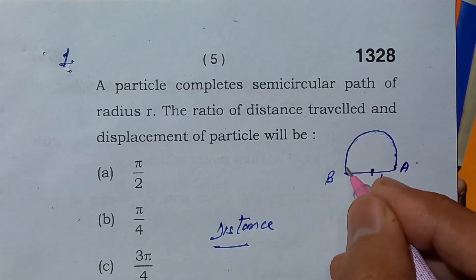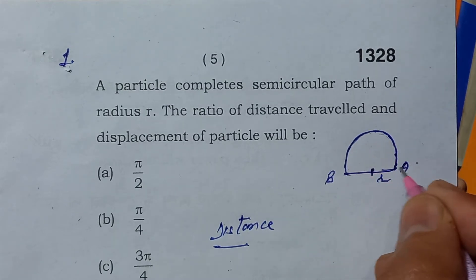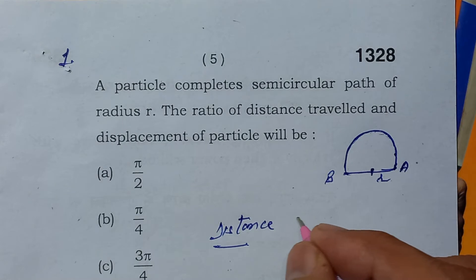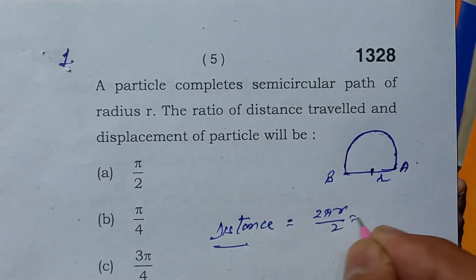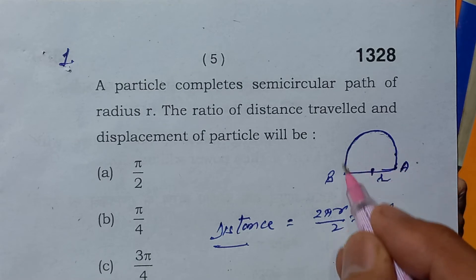In a semicircular path, the circumference will be pi r. We know the distance, the actual path traveled from A to B.